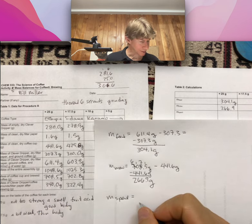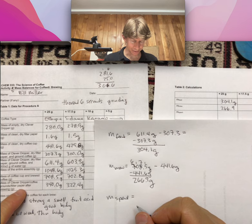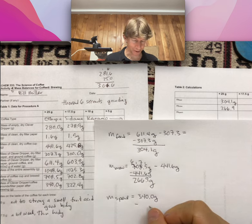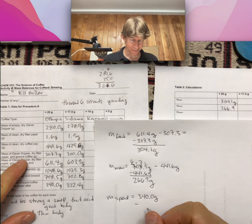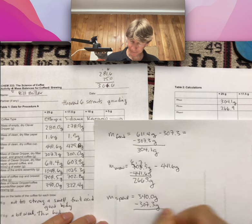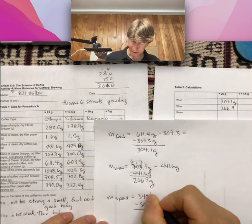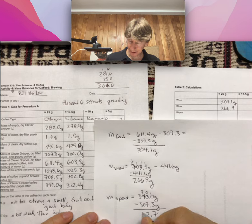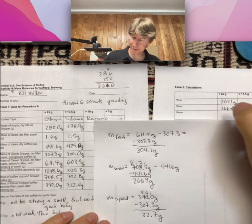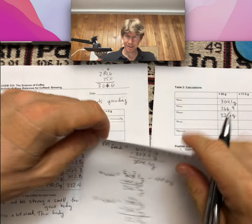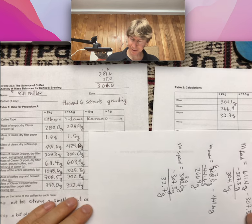Mass spent equals mass of clever dripper after brewing, so 340.0 for me. And I'm just going to stack them up. Mine is clever dripper dry filter paper and ground coffee, 307.3. And this time, that's 32.7 grams.